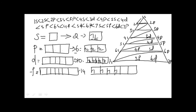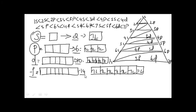The f sub-shell contains 7 orbitals; 7 × 2 = 14 electrons maximum. So: s orbital — maximum 2 electrons; p orbital — maximum 6; d orbital — maximum 10; f orbital — maximum 14. This is very important to know when filling electrons in various orbitals.